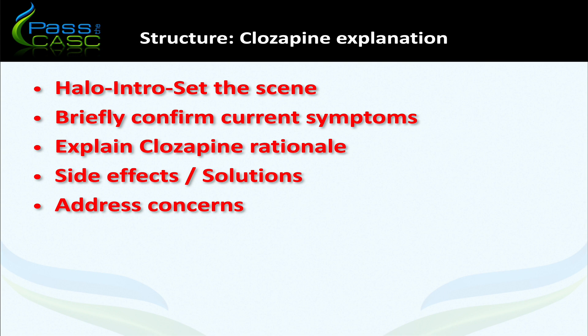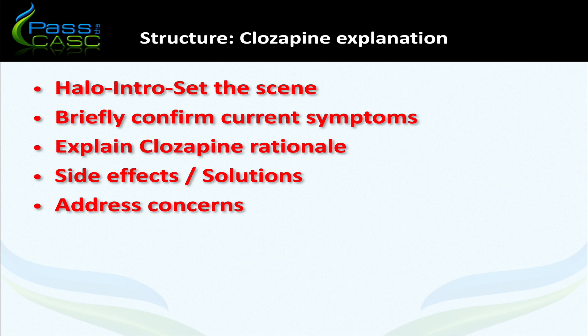After introducing myself and setting the scene, I briefly confirmed his current symptoms, then moved on to mentioning clozapine as the next treatment of choice. I explained the rationale — that clozapine is superior to other antipsychotics, that evidence has been around for a long time, it's reserved for treatment-resistant cases, and helps improve mood and reduce suicidality. One of his queries was also: why wasn't I started on this before? We explain it's reserved for treatment-resistant cases.